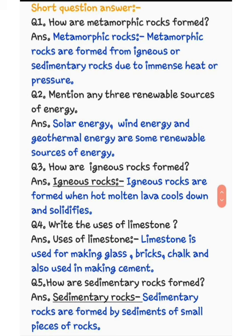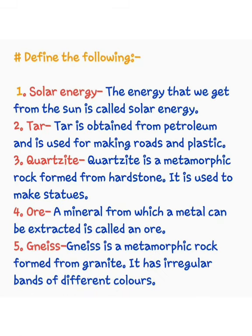Question 5: how are sedimentary rocks formed? Sedimentary rocks कैसे बनते हैं? Sedimentary rocks are formed by sediments of small pieces of rocks. जो sedimentary rocks होते हैं वो rocks के small pieces के इकठे होने के कारण, sediments के कारण बनते हैं।